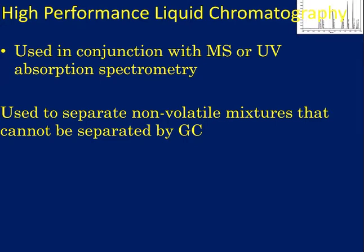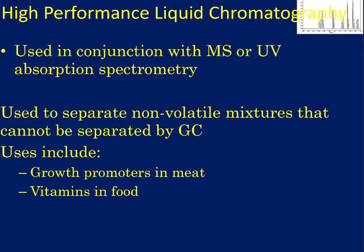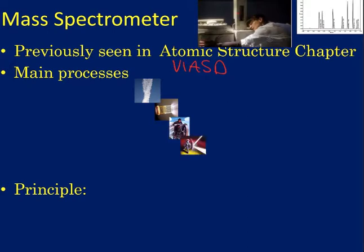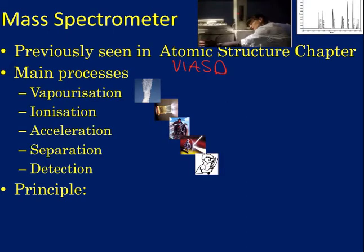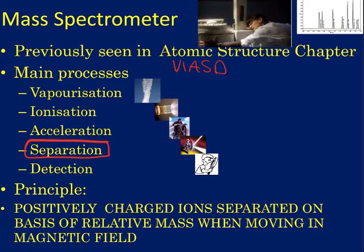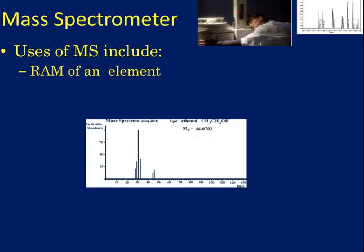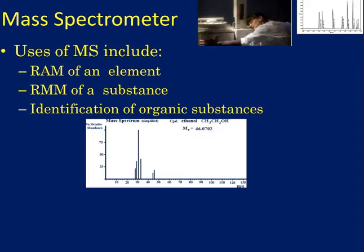HPLC is used to separate non-volatile mixtures; uses include detecting growth promoters in meat and vitamins in food. Moving on to mass spectrometry, which we already covered in Form 4 — remember the acronym VIASД: vaporization, ionization, acceleration, separation, and detection. You need to know each of those steps with a sentence for each. The principle of separation is that positively charged ions are separated on the basis of their mass when moving in a magnetic field — the lighter the ion, the more deflection.